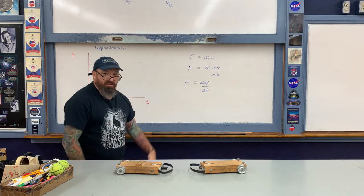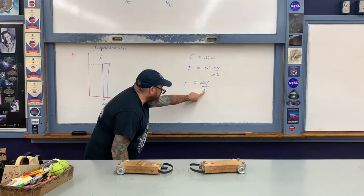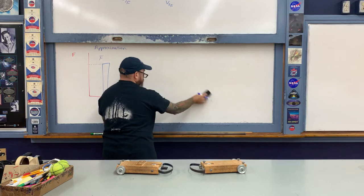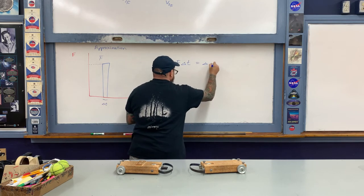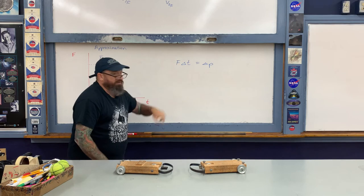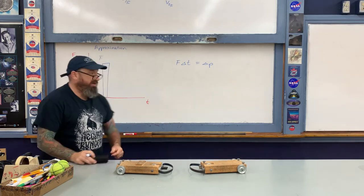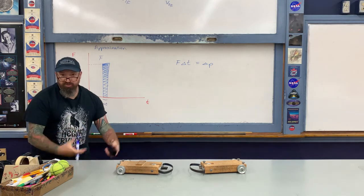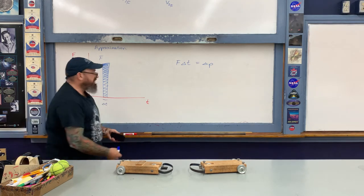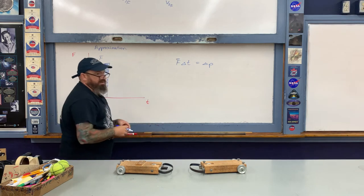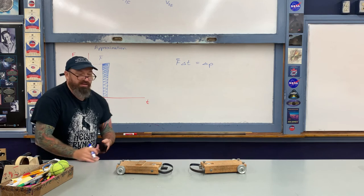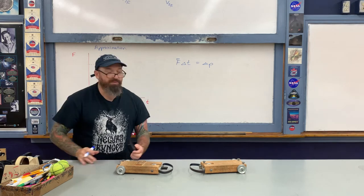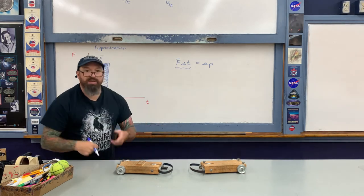How does this form of Newton's second law relate to this graph? We take delta-t and move it over to the left-hand side, so the expression becomes: force times delta-t equals change in momentum. Force multiplied by time is actually the area of this rectangle — the average force times the time interval, which is height times base. We give this quantity a name: it is referred to as impulse.